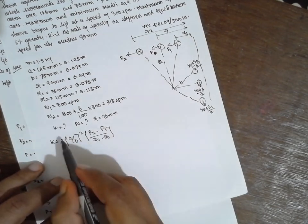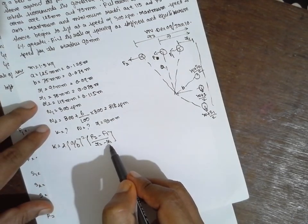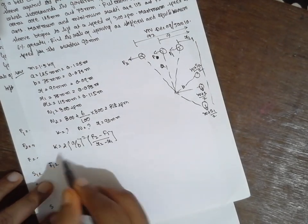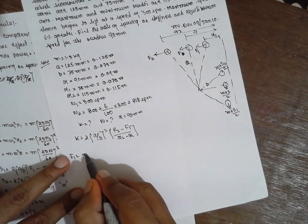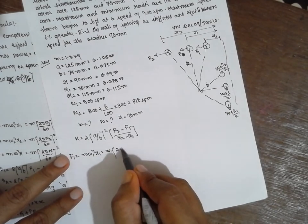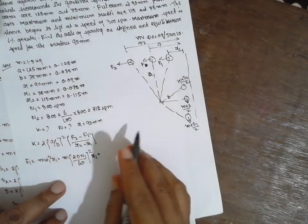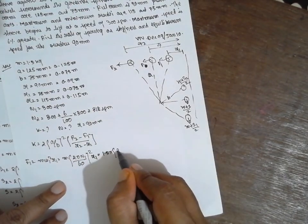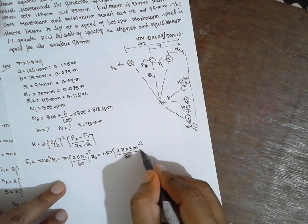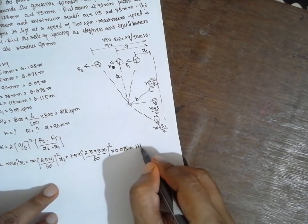A is known, B is known, R2 and R1 are known; we need to find F1 and F2. F1 equals M·ω1²·R1, which is M·(2πN1/60)²·R1. Substituting: M is 1.5 kg, N1 is 300 rpm, R1 is 0.075 m. Therefore F1 equals 111.03 N.